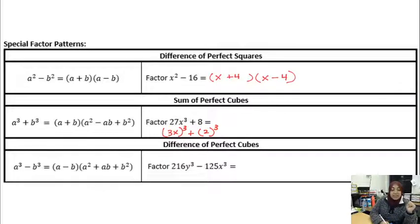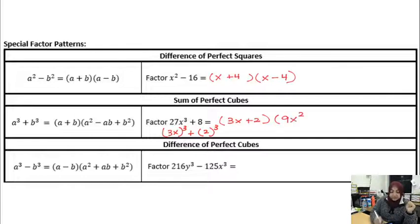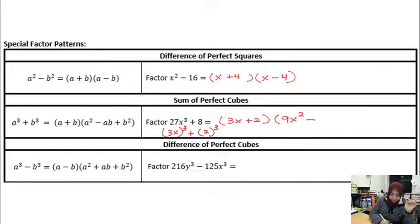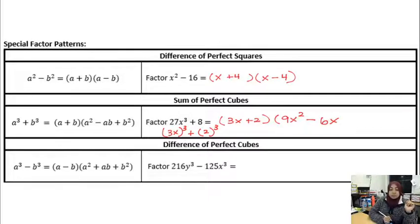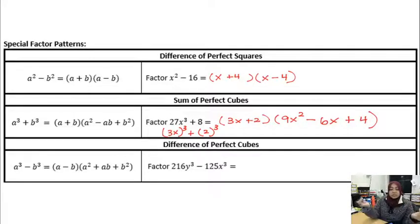So I have A + B, which is (3x + 2). Then A² is (3x)² = 9x², minus AB which is 3x times 2 = 6x, plus B² which is 2² = 4. So the factored form is (3x + 2)(9x² − 6x + 4). You don't have to do any long process — just plug into the formula.